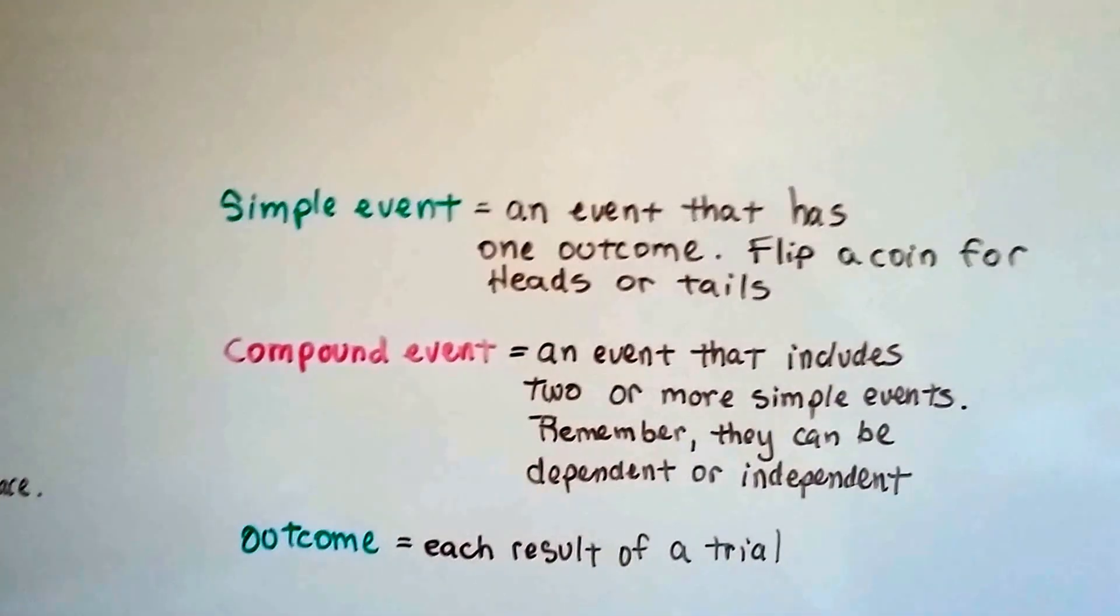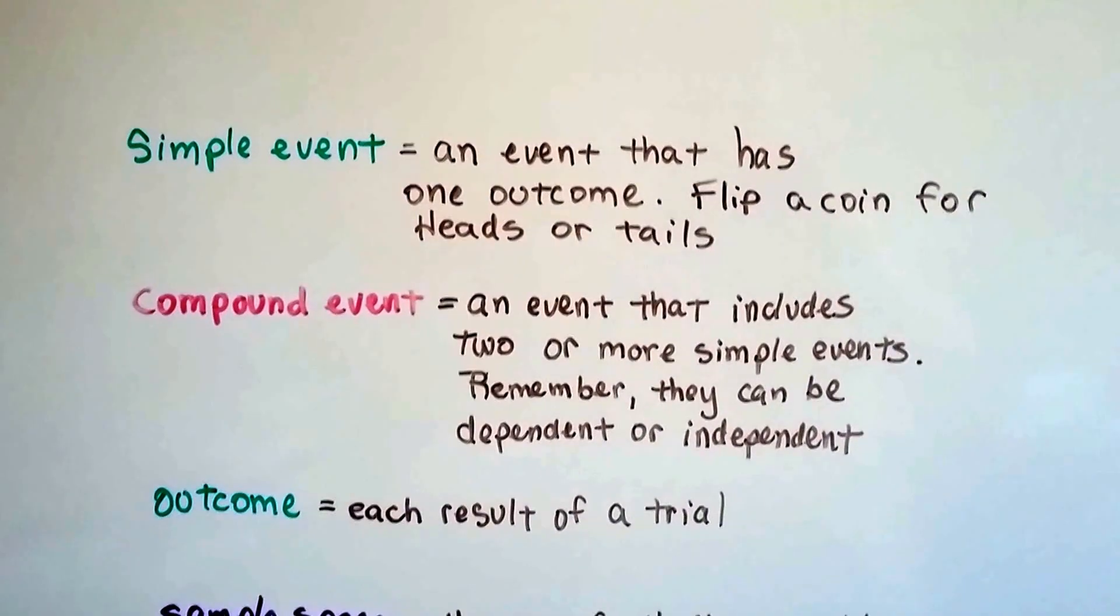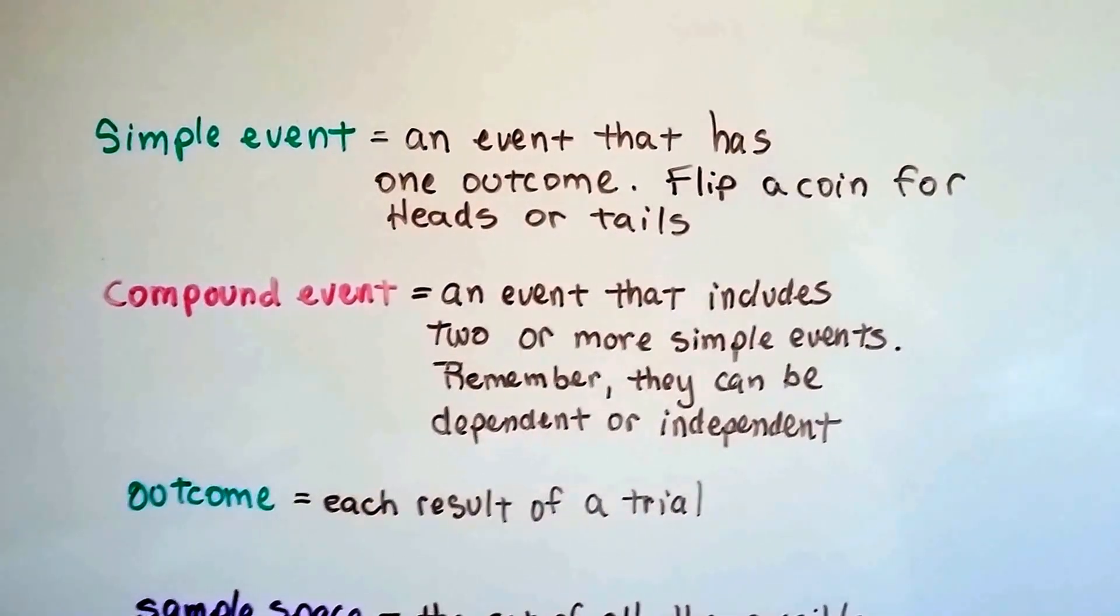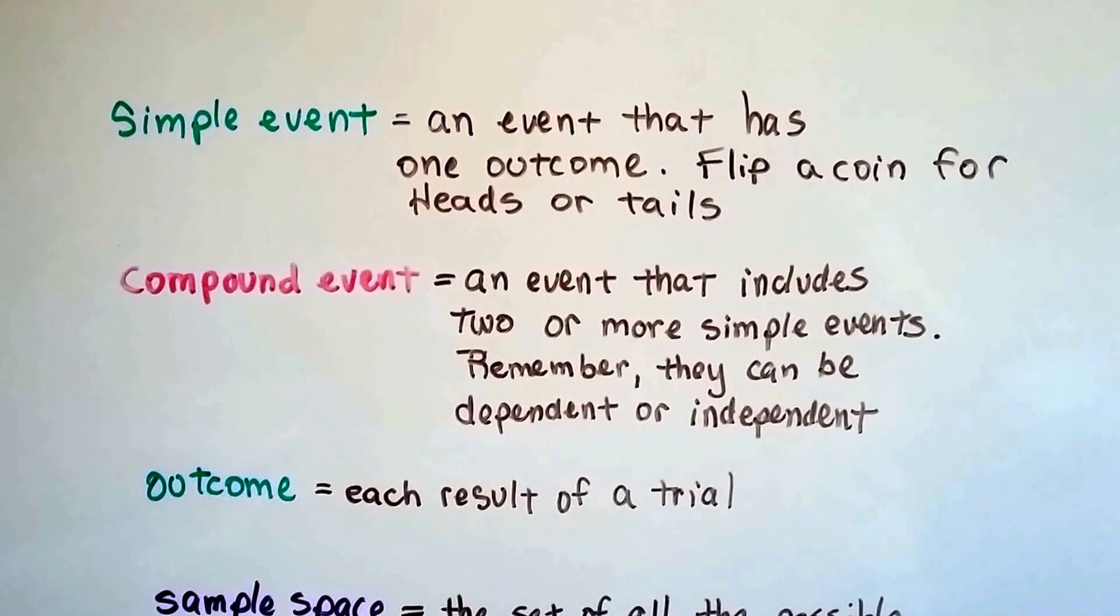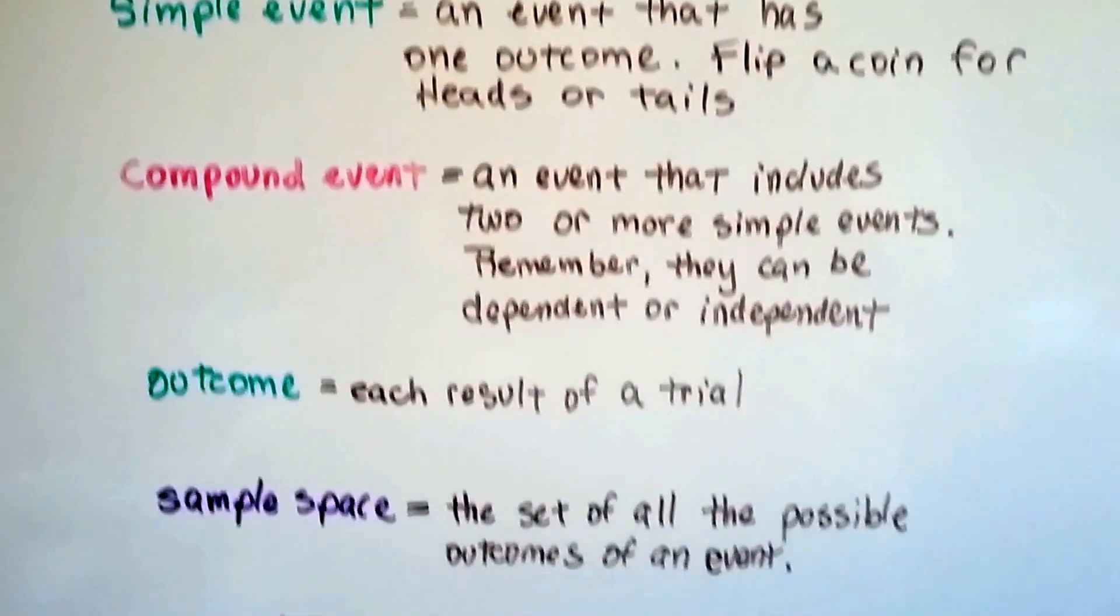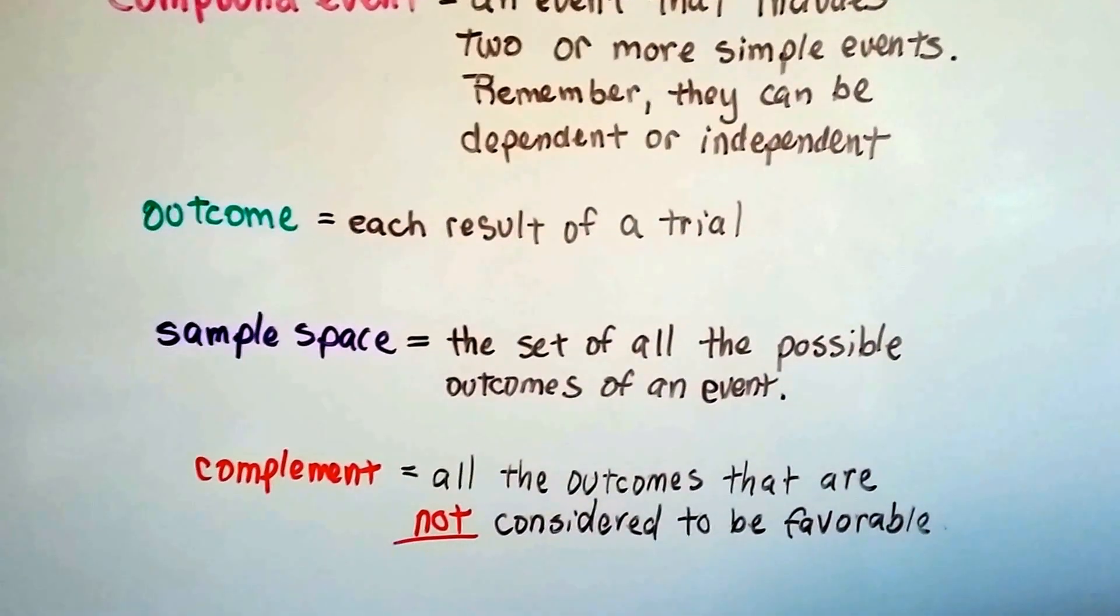So remember, a simple event is an event that has one outcome, like the flip of a coin for heads or tails. And a compound event is an event that includes two or more simple events. Remember, they can be dependent or independent, like we've said in previous videos. The outcome is each result of a trial.